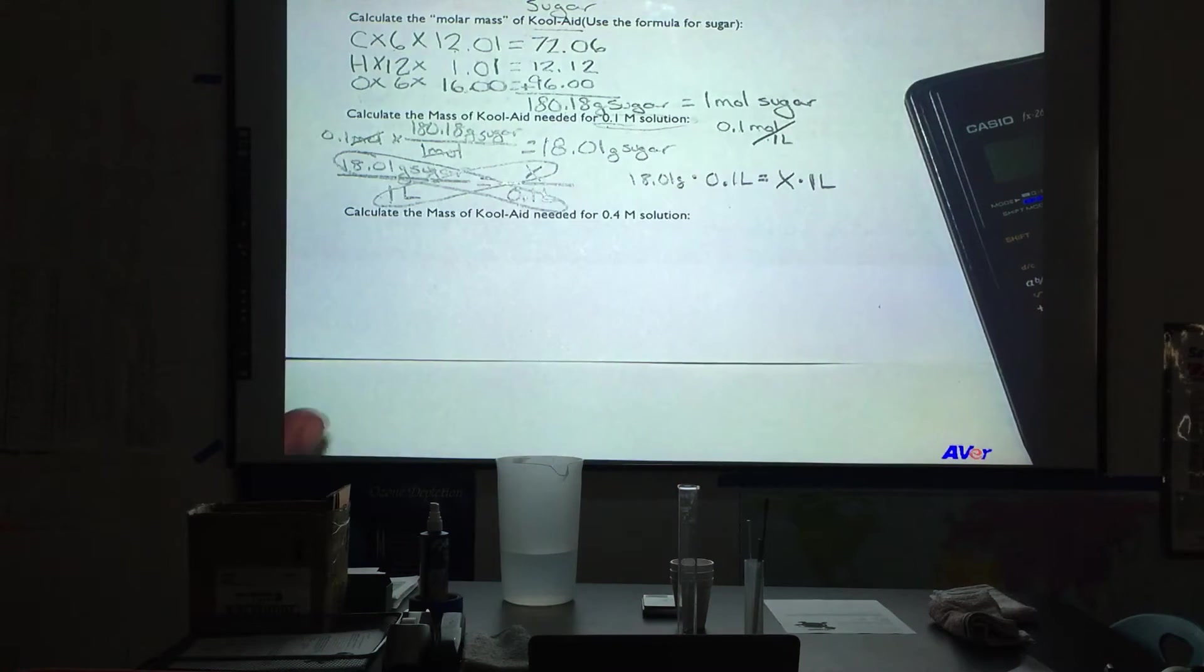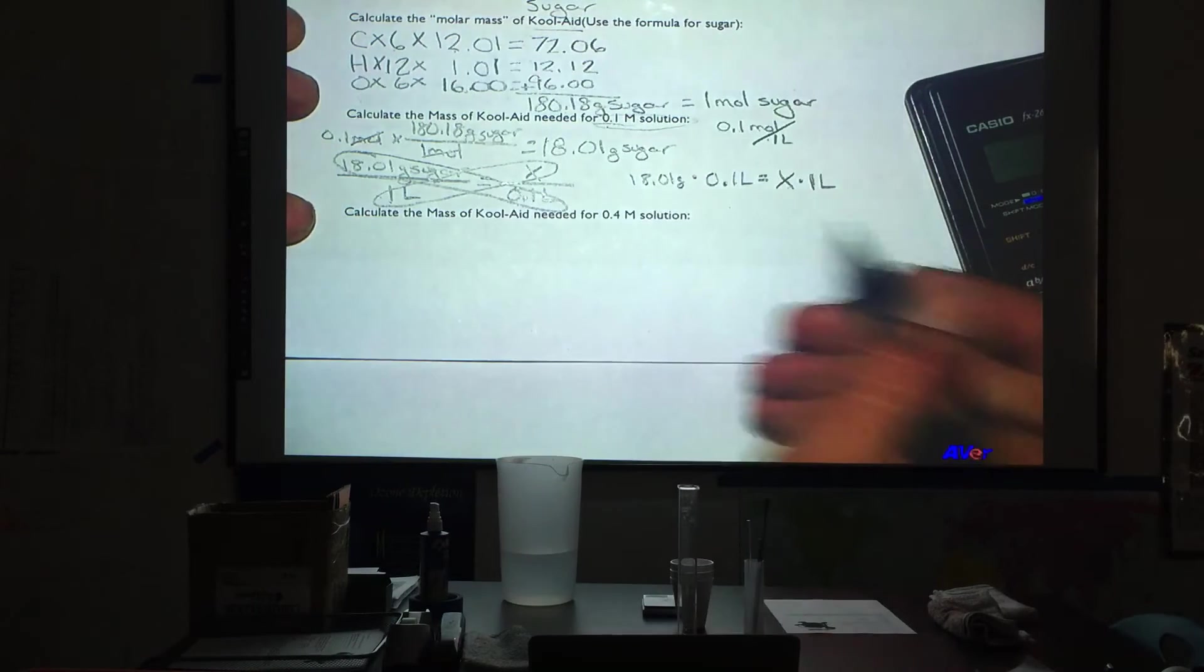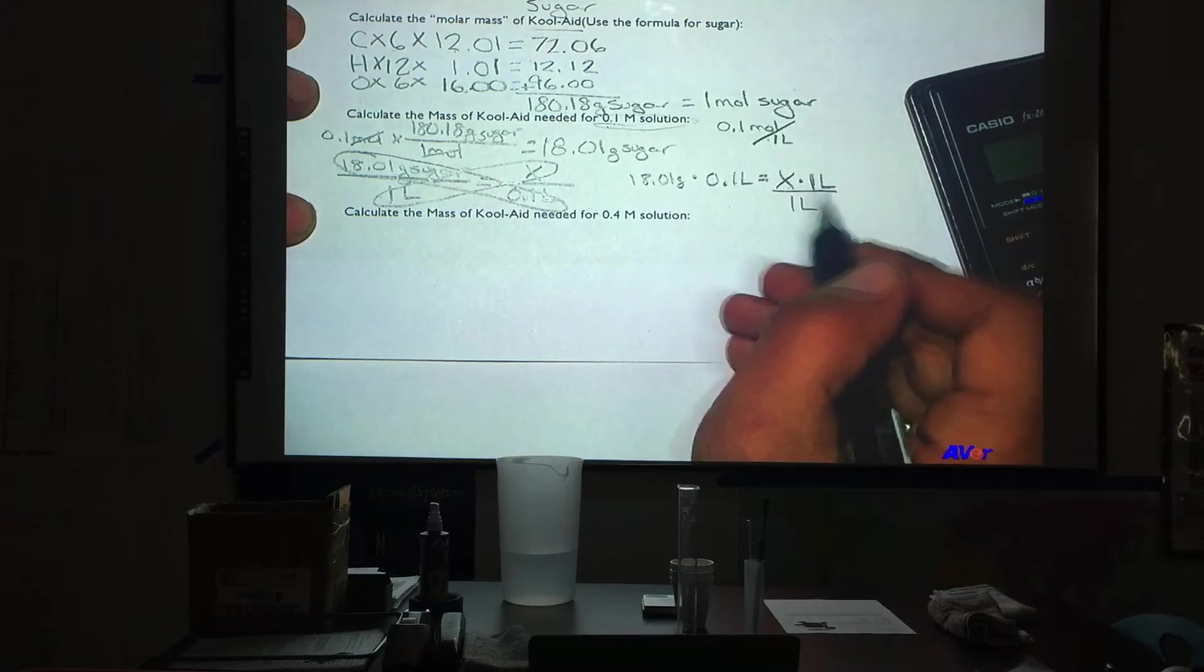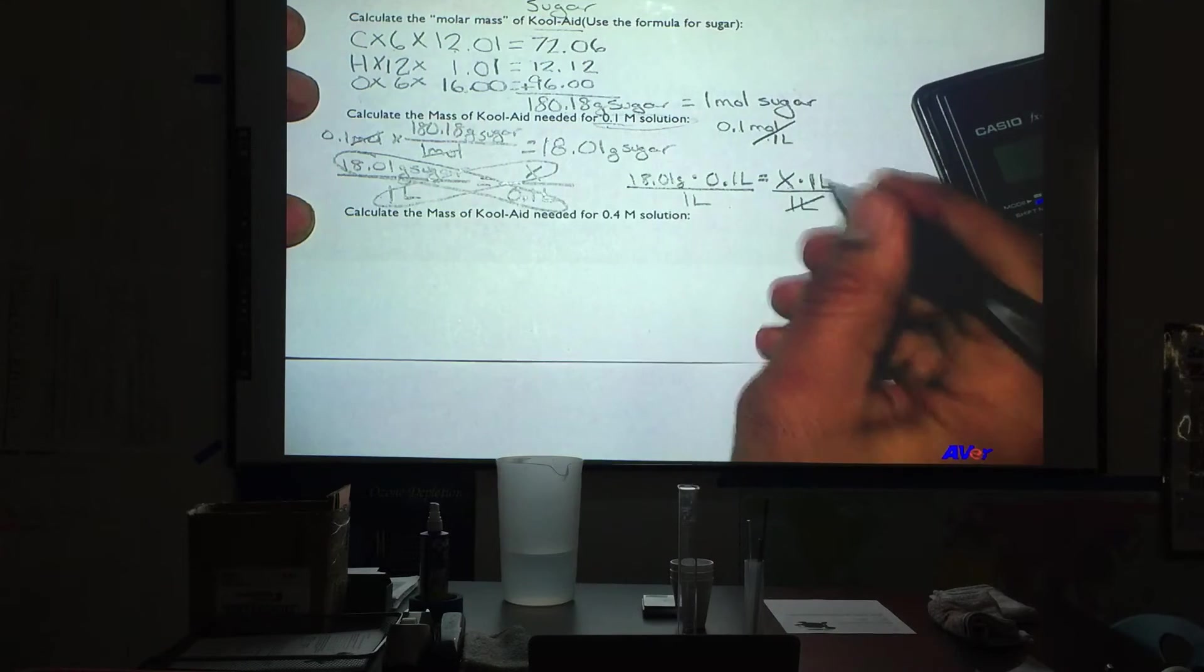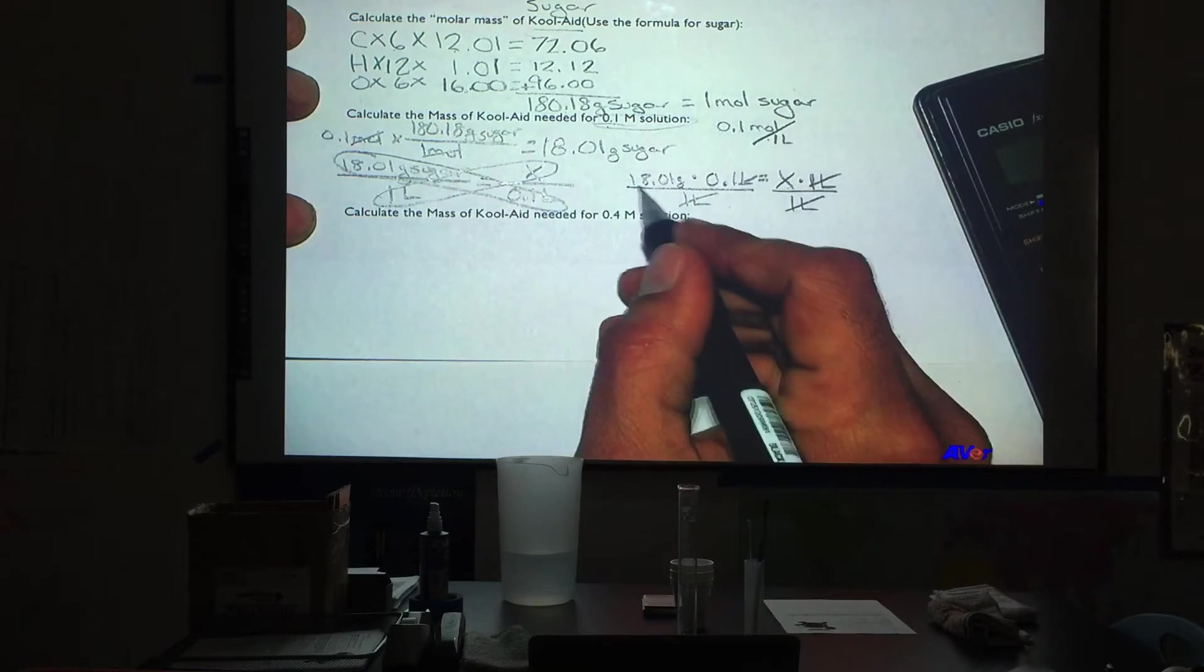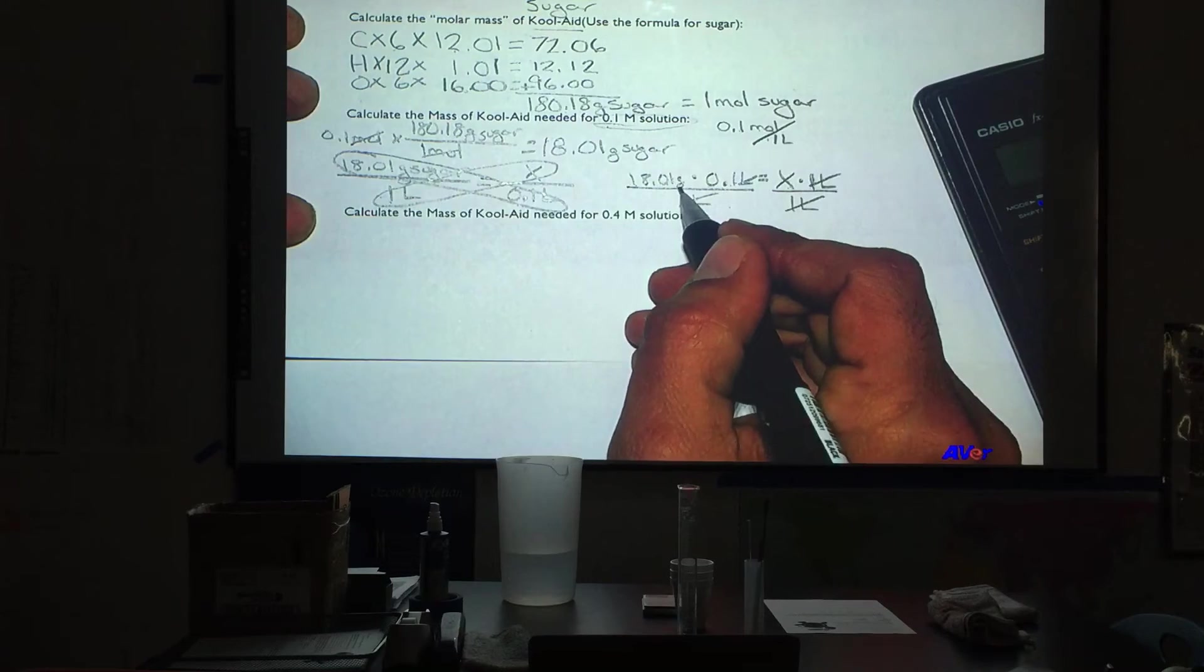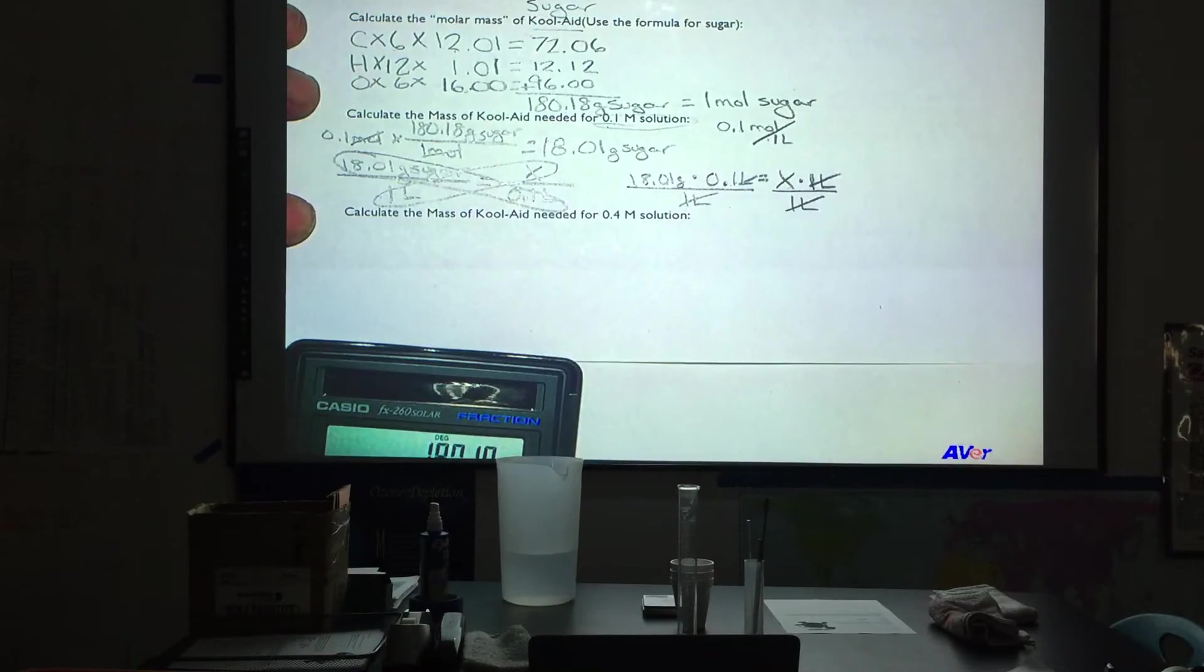This is going to be equal to x times 1 liter. Now this should look like something you are a little bit more familiar with. Because we want to get x by itself, we are going to divide away that 1 liter. Whatever we do to one side we have to do to the other. Liters are cancelled. And we will end up with 18.01 grams times 0.1. That will give us our amount of sugar that we are going to need to put in that 0.1 liter.